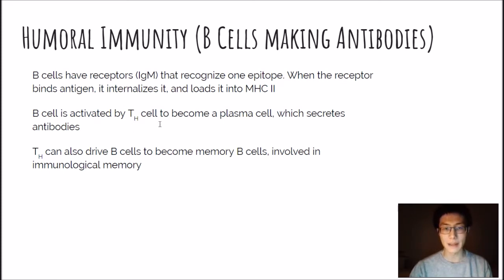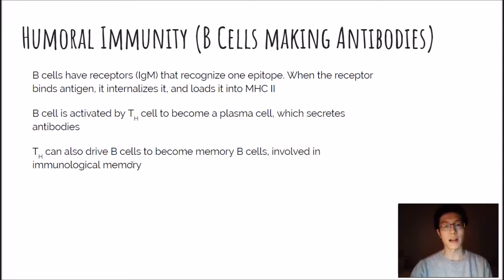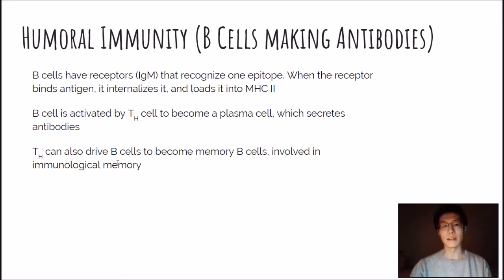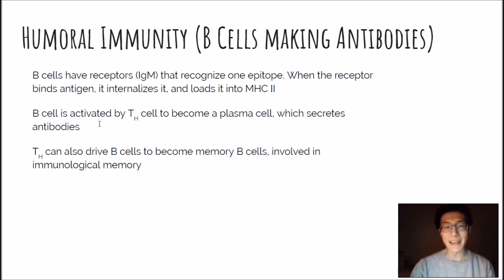The B cell is going to be activated by the T cell, and eventually it can differentiate into a plasma cell, which ends up secreting antibodies. Those T helper cells can also drive B cells to become memory B cells, which are involved in immunological memory. So the B cell is a direct effector — it makes soldiers that go and target viruses in your body by shooting out antibodies.